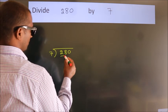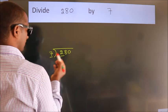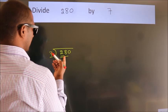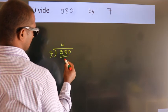Here we have 2. Here 7. 2 is smaller than 7, so we should take 2 numbers: 28. When do we get 28? In the 7 table. 7 fours, 28.